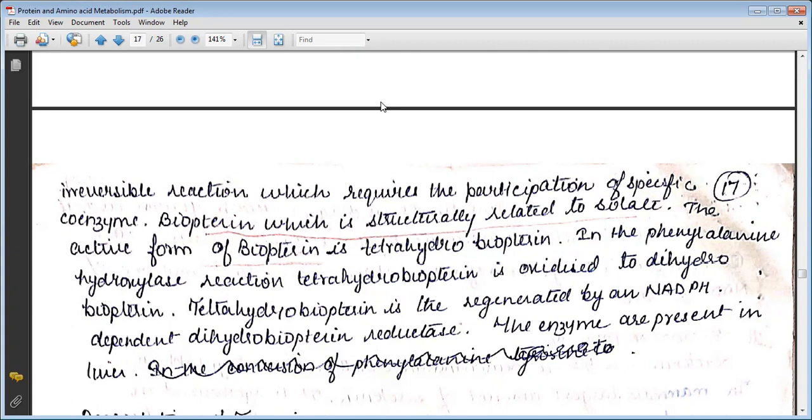The active form of biopterin is tetrahydrobiopterin. In the phenylalanine hydroxylase reaction, tetrahydrobiopterin is oxidized to dihydrobiopterin. Tetrahydrobiopterin is regenerated by an NADPH-dependent dihydrobiopterin reductase.